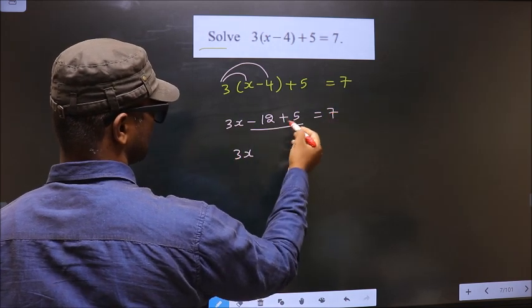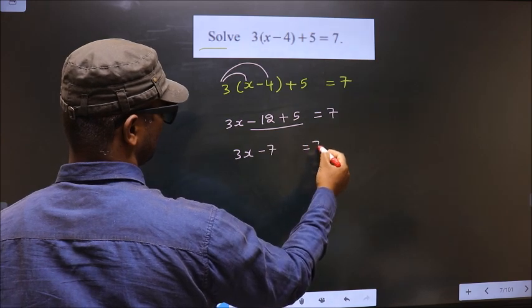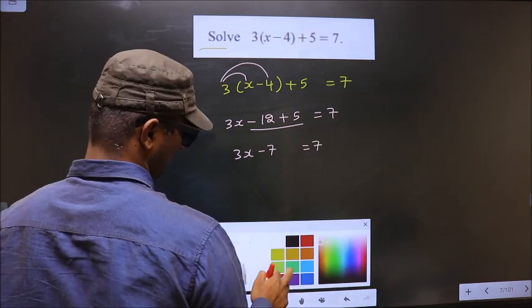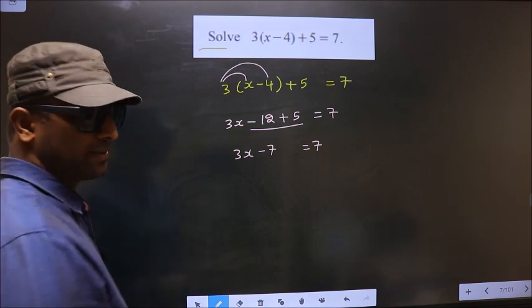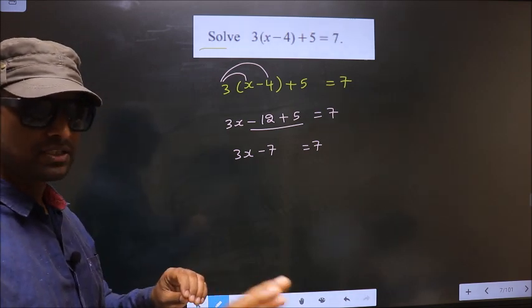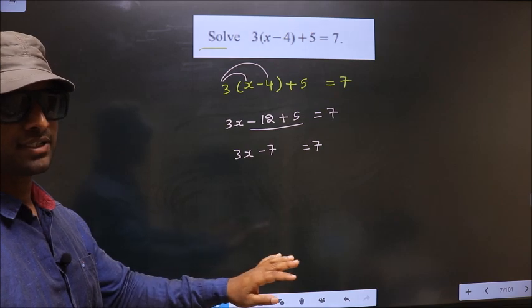3x minus 12 plus 5 is 3x minus 7 equals 7. Now remember, all numbers on one side, letters on another side.